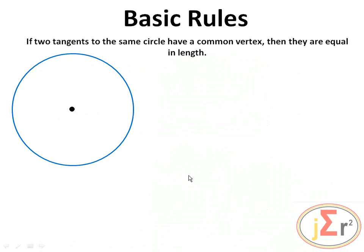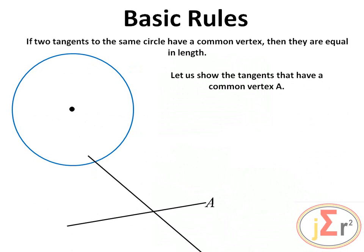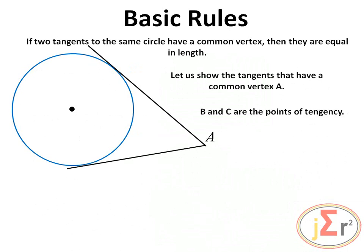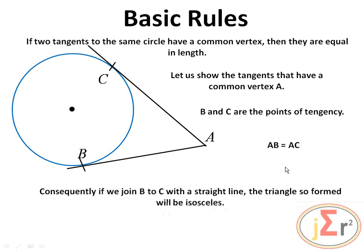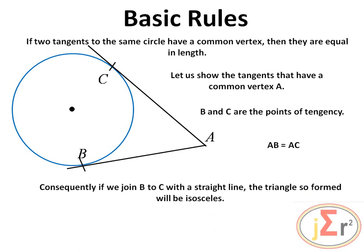If two tangents to the same circle have a common external vertex A, they are equal in length. If B and C are the points of tangency, then AB equals AC. Consequently, if we join B to C with a straight line, the triangle formed will be isosceles with the two tangent sides always equal.